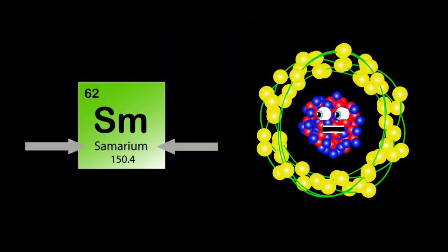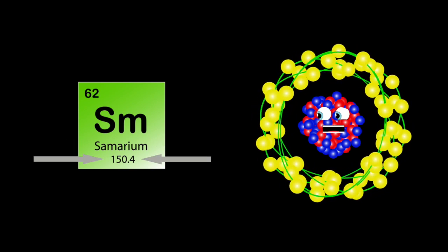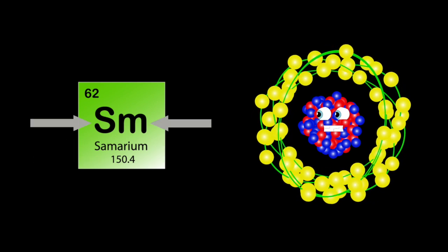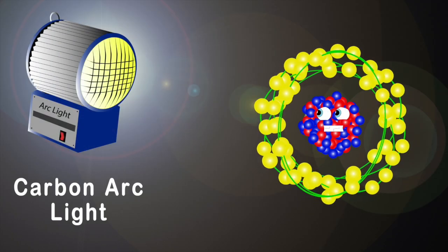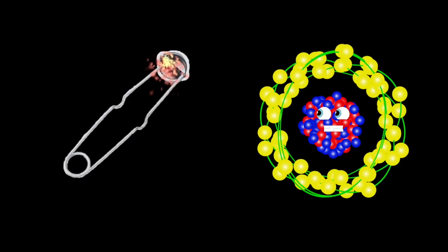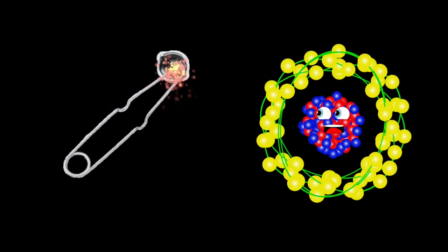My atomic number's 62, I am samarium, my atomic mass is 150, my symbol is SM. I'm also used in motion picture arc lighting, I make flints and lighters, now isn't that exciting?